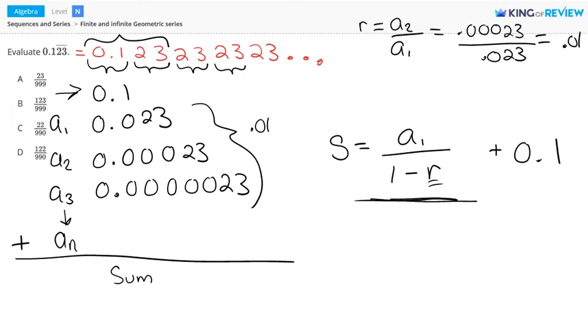So let's figure out the sum portion here. So A1 over 1 minus R. A1, that's this term here, is 0.023 divided by 1 minus R, which is 0.01. And to that we're adding 0.1.